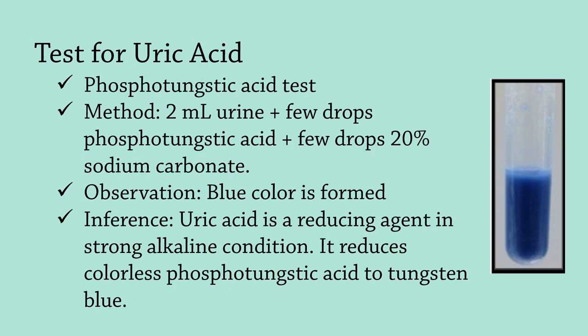Test for uric acid, also called the phosphotungstic acid test: In 2 ml of urine sample, add a few drops of phosphotungstic acid and a few drops of 20% sodium carbonate. Note the blue color that is formed. Uric acid is a reducing agent in strong alkaline conditions; it reduces colorless phosphotungstic acid to tungsten blue.